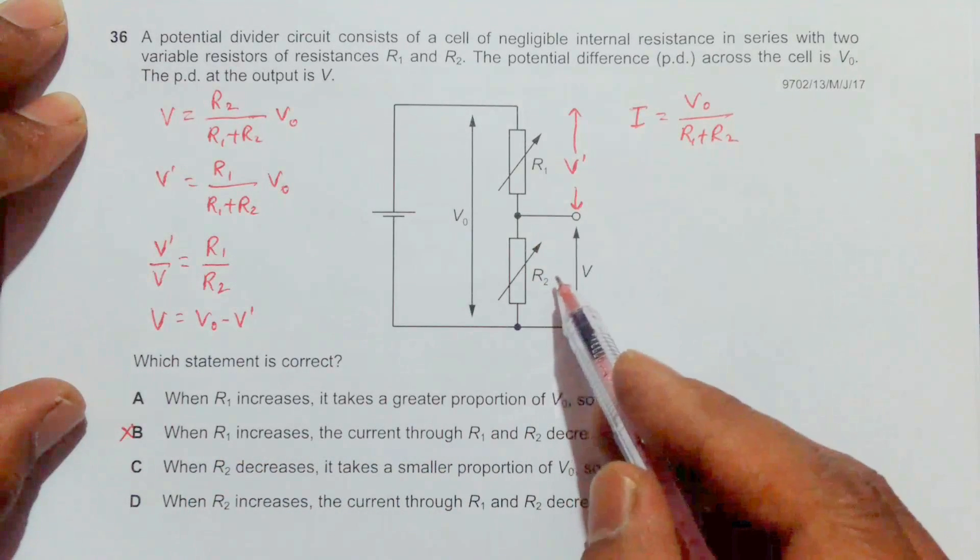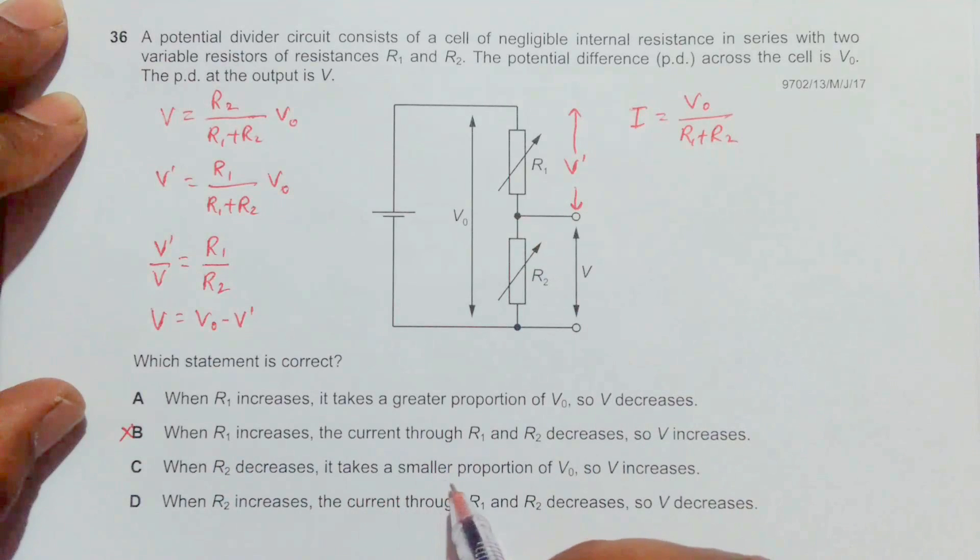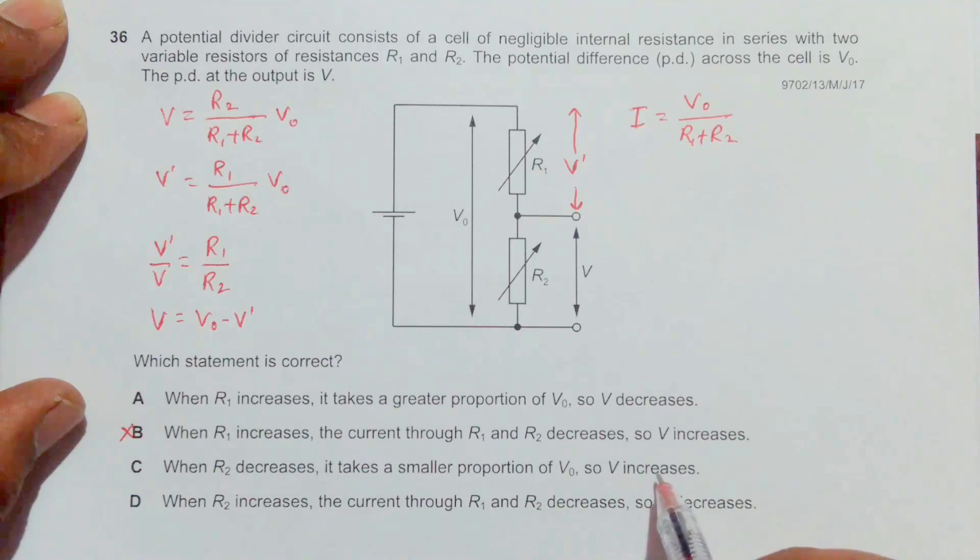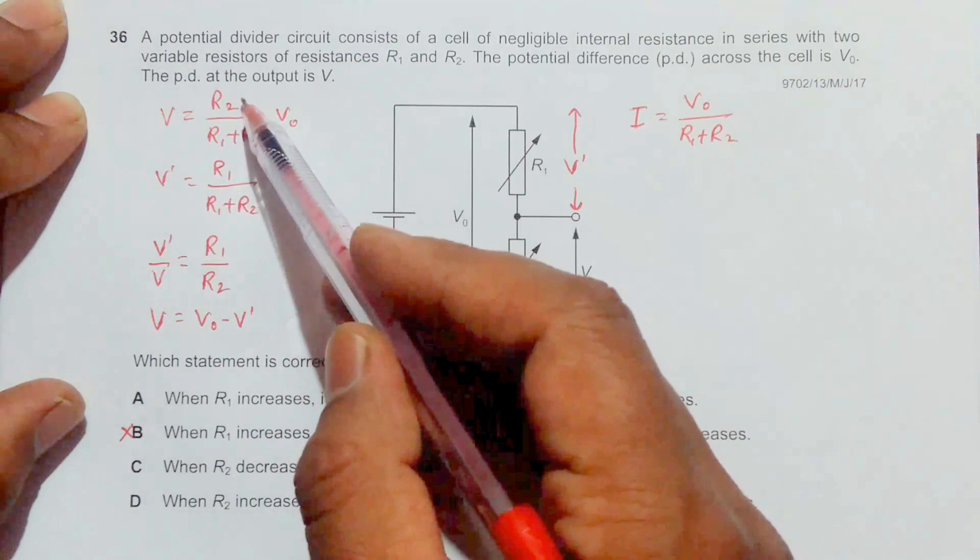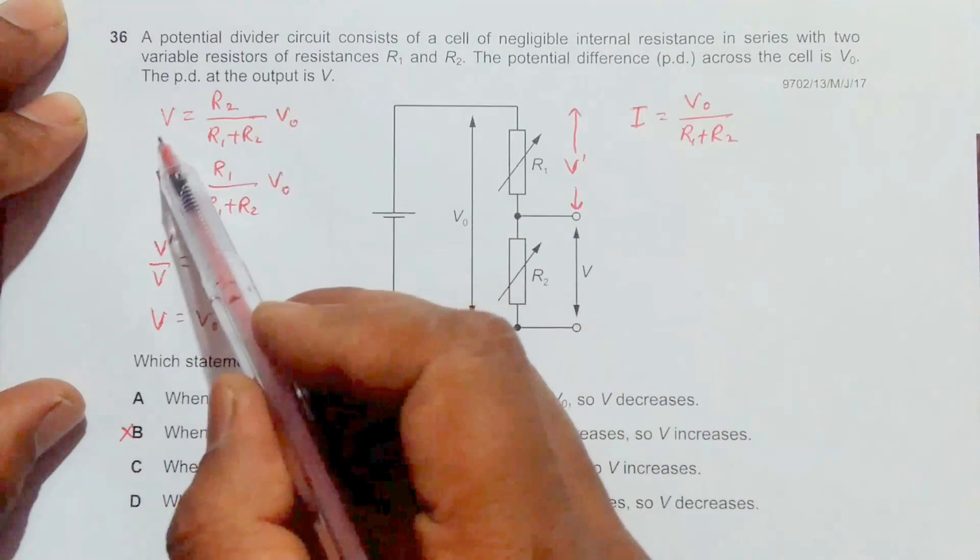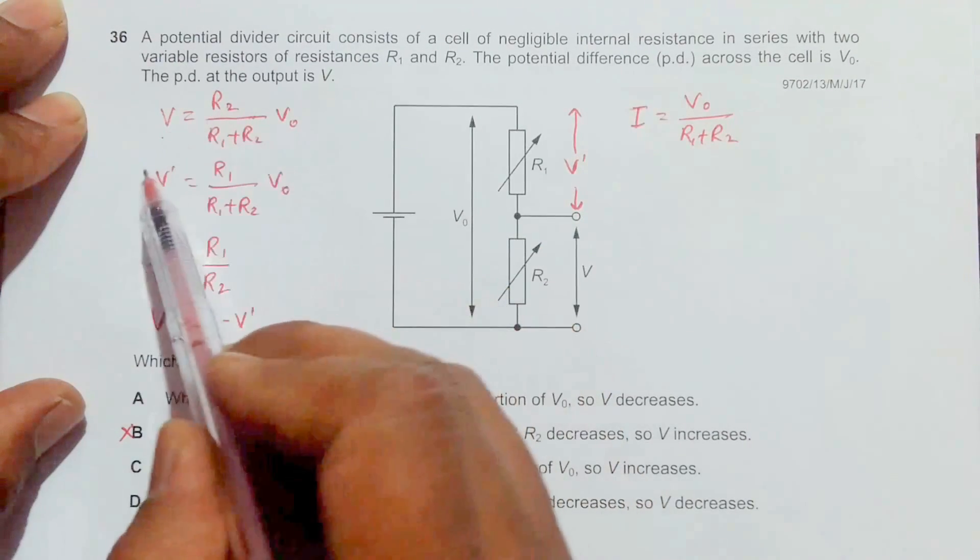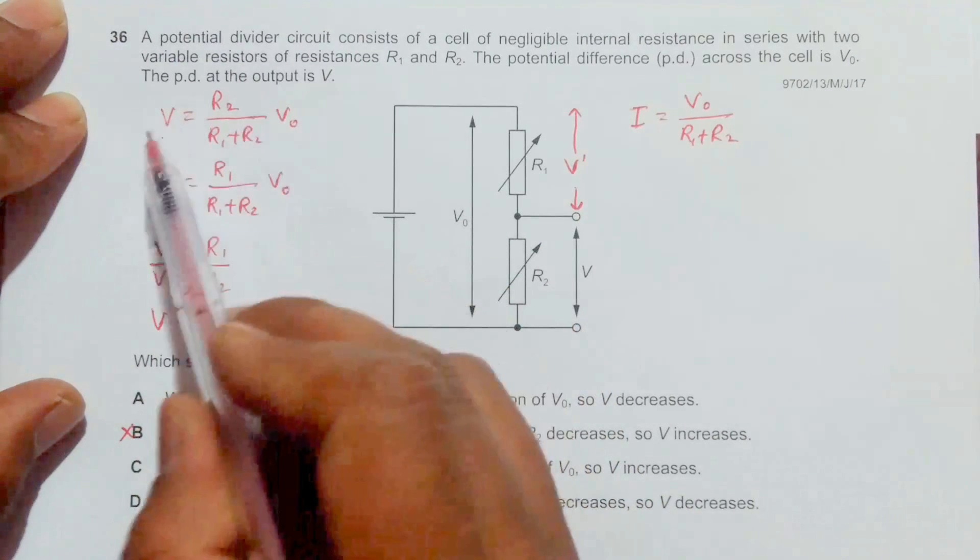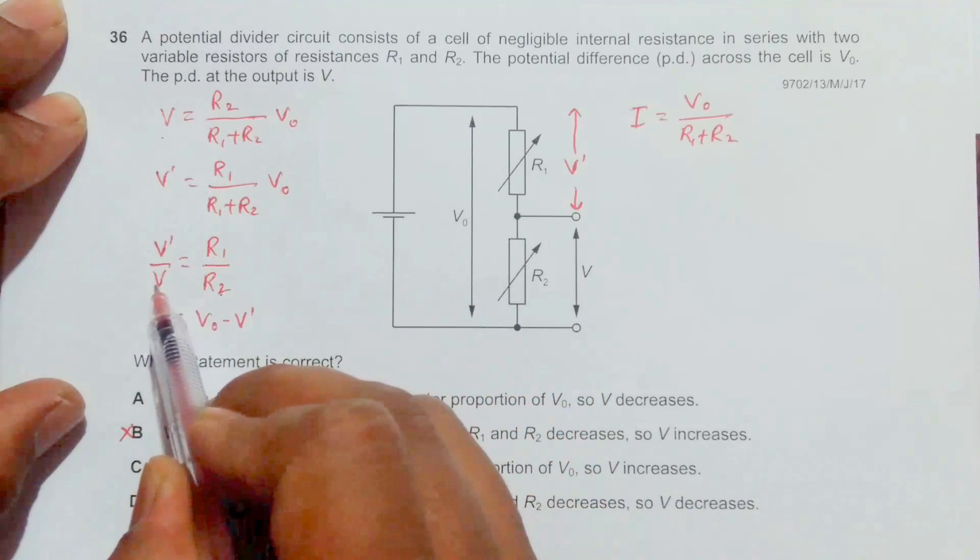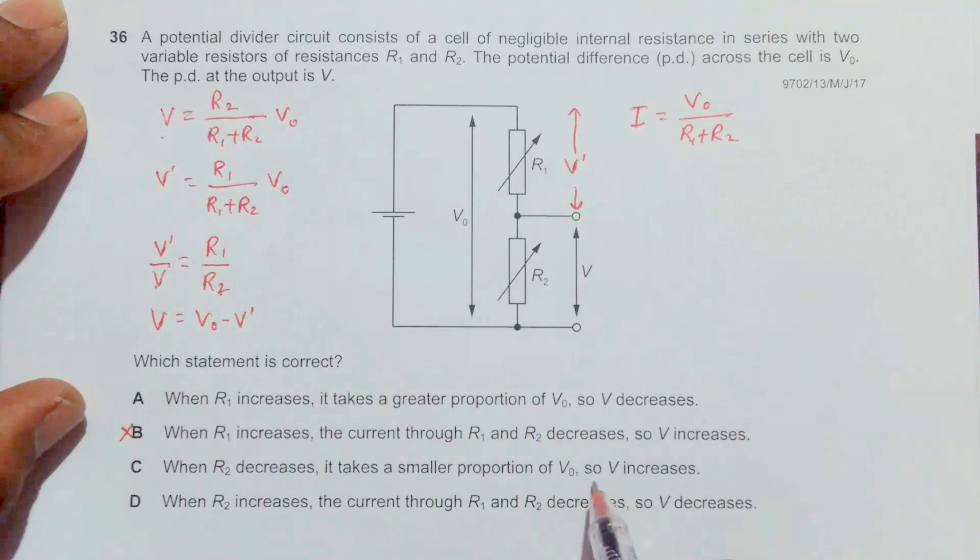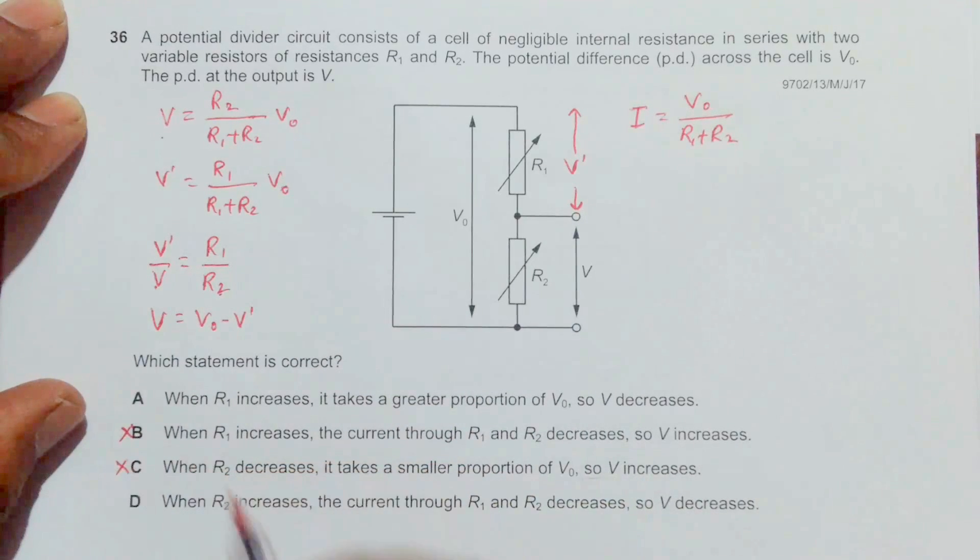Choice C: when R2 decreases, it takes a smaller proportion of V naught, so V increases. This is incorrect because when R2 decreases, V should decrease according to our formula, which contradicts what's stated here.